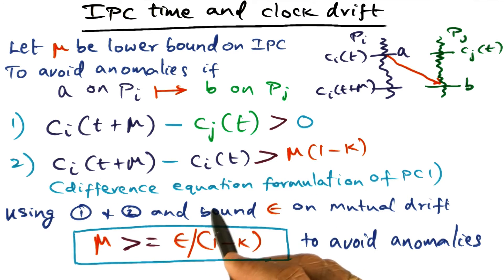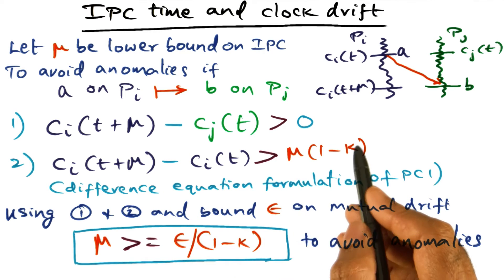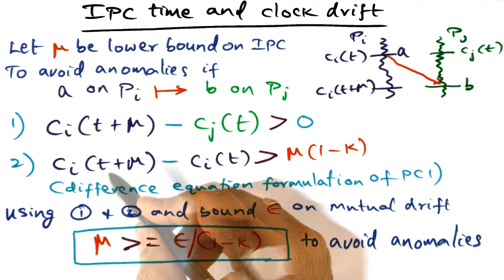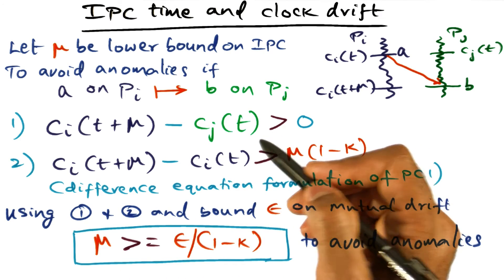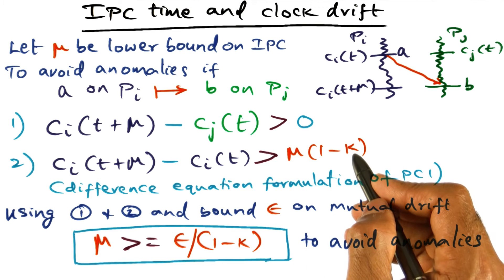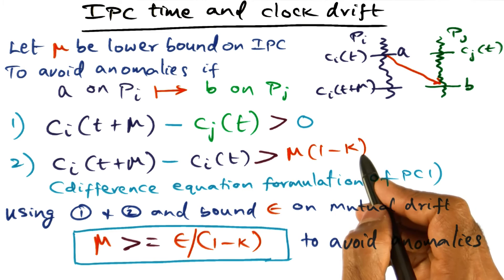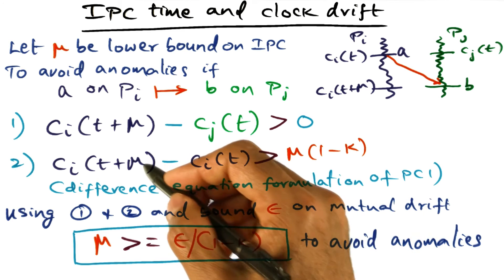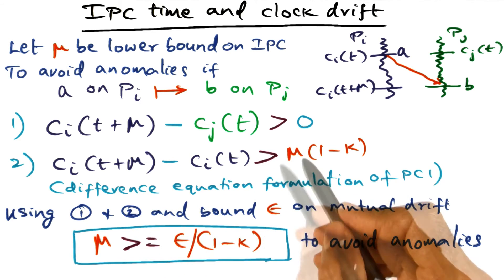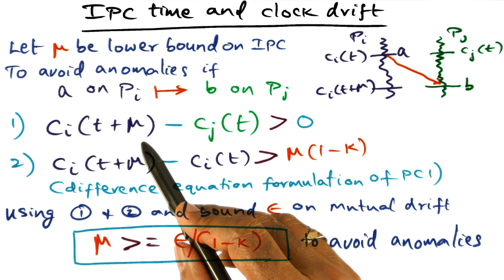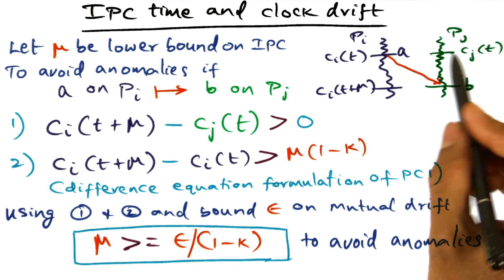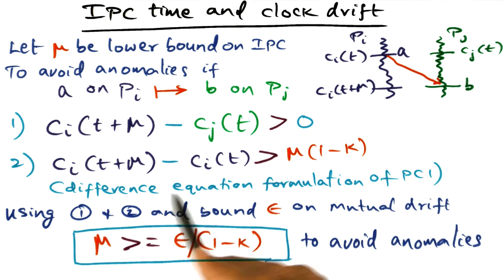And the second equation is basically a difference equation formulation of the formula that I gave you, which I called PC1. And this is basically saying that if k is 0, when I read the clock at time t plus mu, and see the difference between the clock reading now and the clock reading when I read it at time t, it should exactly be mu. But because of the fact that I may have individual clock drift, it may not be exactly mu, but it may be something different from mu. And so all that we are saying is that the amount of individual clock drift should be negligible compared to the inter-process communication time. So the first thing is saying that the inter-process communication time is much bigger than any clock drift that exists between two different clocks. And the second equation is saying that the individual clock drift is very small compared to mu.